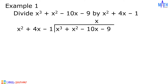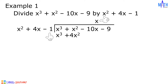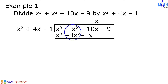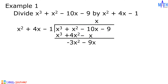Next step, let us multiply x by x squared plus 4x minus 1. x times x squared is equal to x cubed. x times 4x is equal to 4x squared. x times negative 1 is equal to negative x. Let us subtract: x cubed minus x cubed is equal to 0. x squared minus 4x squared is equal to negative 3x squared. Negative 10x minus negative x is equal to negative 9x. Then we bring down negative 9.